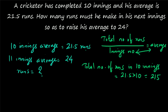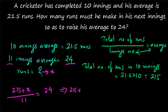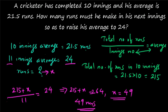The new average should be equal to 24 and the total number of matches now becomes 11. Let his runs taken in the 11th match be equal to x. So 215 plus x divided by 11 will be equal to 24. That gives 215 plus x equals 264, so x equals 264 minus 215, which gives you 49. He should take 49 runs in his 11th innings so as to raise his average to 24.